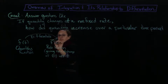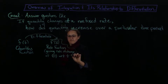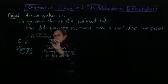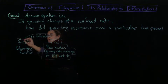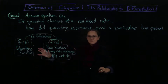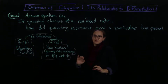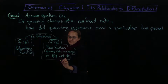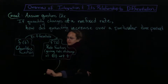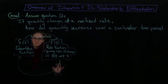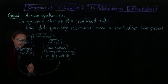So f prime of t is a rate function giving the rate of change of f of t with respect to t. So before, this is kind of what we've been doing: you take this quantity function, you differentiate, you get this rate function. And then what integration is going to do is it's going to tell you how to go back in the other direction — to go back in the other direction, you use integration.